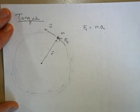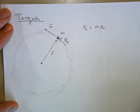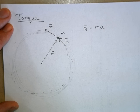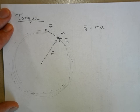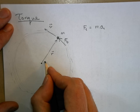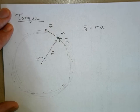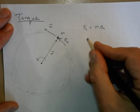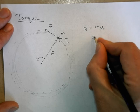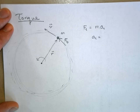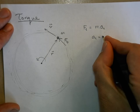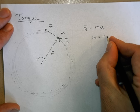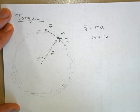This is just one particle; we're going to extend it to many particles in a minute. Let's relate tangential acceleration to angular acceleration alpha. How was tangential acceleration related to angular acceleration? Well, it was r times alpha.